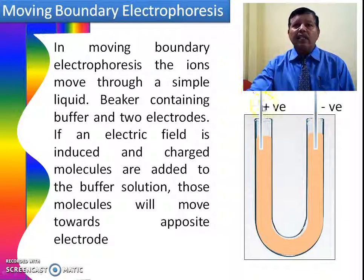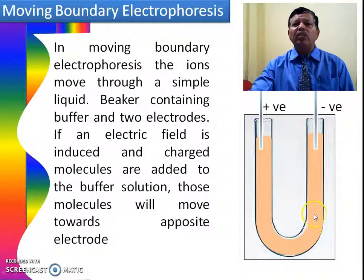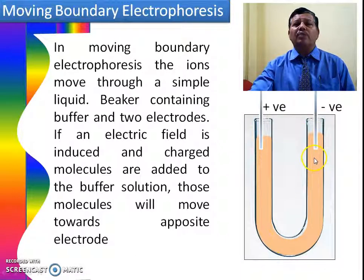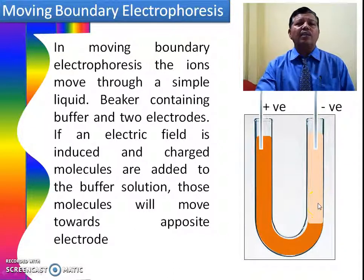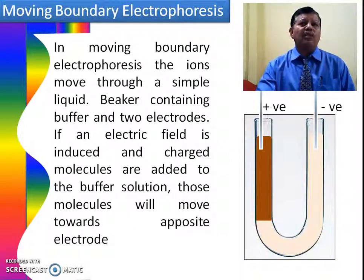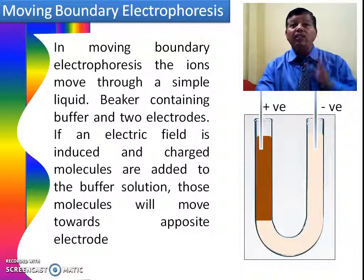When we connect the electric power, the negative ions move towards the positive electrode. If they have a certain color, the boundary of that color is observed moving towards the positive electrode in the tube. Similarly, if positive ions have color, the boundary of the positive ions moves towards the negative electrode. This moving boundary can be measured with a scale. As negative ions collect towards the positive electrode and positive ions collect towards the negative electrode, they get separated from one another. This is why it is called moving boundary electrophoresis.